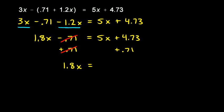The right side, I have this 5x, so let's write that. And then the 4.73 and the 0.71 are like terms, so I can combine those. I just need to add 4.73 and 0.71. So 3 and 1 is 4, 7 and 7 is 14. I get 5.44. So the right side is 5x plus 5.44.